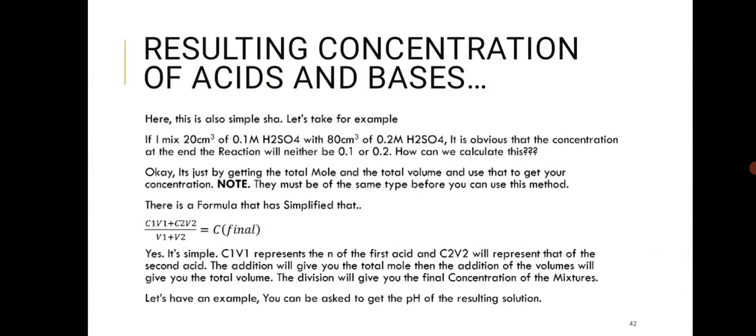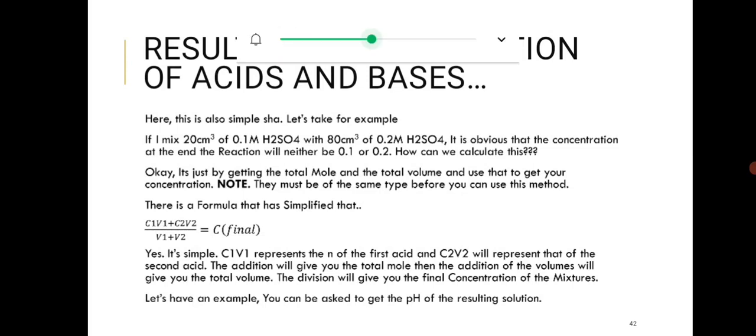When mixing the same substance at different concentrations and volumes, use the formula C1V1 + C2V2 = Cf × Vf. For example, mixing 20 cm³ of 0.1 mol/dm³ solution with 3 cm³ of 0.2 mol/dm³ solution — that's the formula and approach to use.